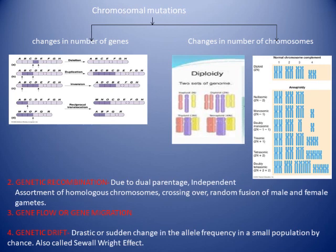Gene flow or gene migration refers to the movement of individuals from one place to another. If migrating individuals breed within the new population, they add new alleles into the local gene pool. These immigrants add their alleles to the host population's existing genes, and this is called gene migration.